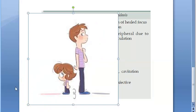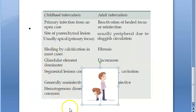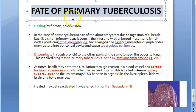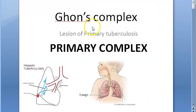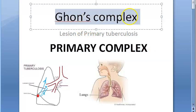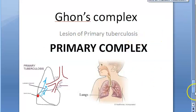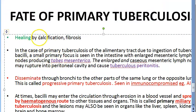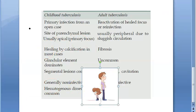Healing is by calcification in most cases of childhood tuberculosis. In adults, healing is by fibrosis. In our Ghon's complex video, we have already seen the fate of primary tuberculosis. So just remember: in children it is calcification; in adults it is fibrosis. Healing is by calcification — mostly.